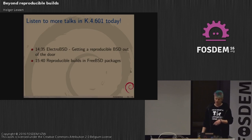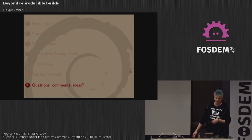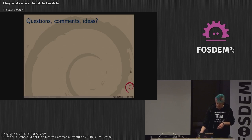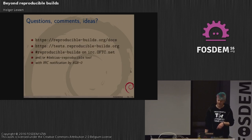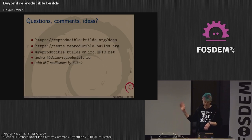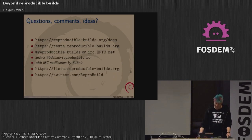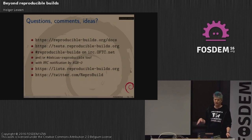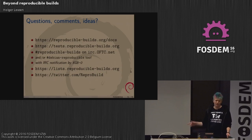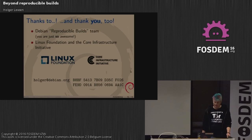There are two more talks today — ElectroBSD and FreeBSD — both in the BSD developer room. These are the resources: the IRC channel gets notifications of changes, we have a Debian mailing list and a general mailing list at lists.reproducible-builds.org, and we also have a Twitter account. Thanks for listening and thanks for contributing.